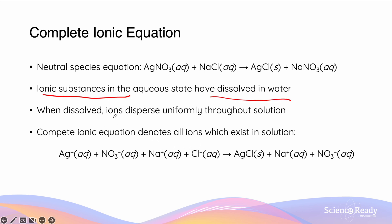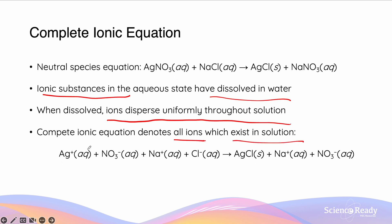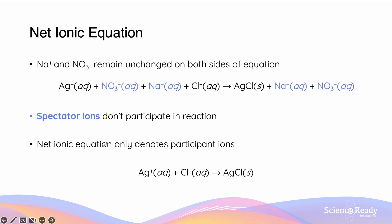When ionic substances become dissolved, the lattice structure breaks down and the ions they consist of disperse uniformly throughout the solution. Therefore, we can write a complete ionic equation to denote all ions which exist in solution. So AgNO3 (aqueous) will have Ag+ and NO3- ions; NaCl (aqueous) will have Na+ and Cl- ions. AgCl, which is insoluble, remains as a solid, and we also have sodium and nitrate ions dispersed in solution. What we should notice is that NO3- (nitrate) and Na+ (sodium) both exist on the reactant and product side — they do not participate in the reaction themselves. We call these spectator ions. When asked for the net ionic equation, we leave out spectator ions and only give the participating ions.